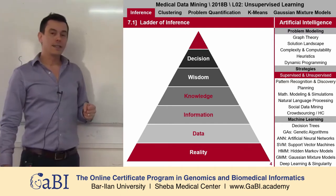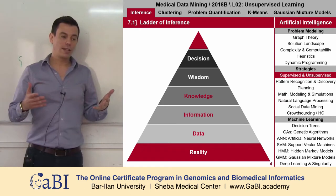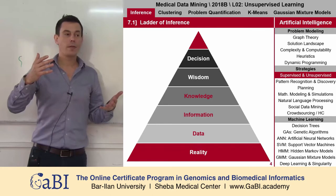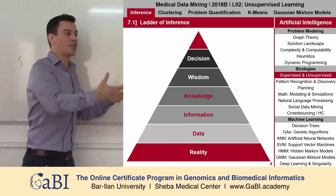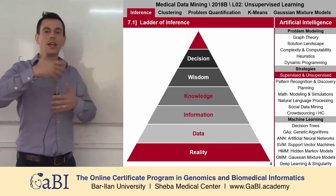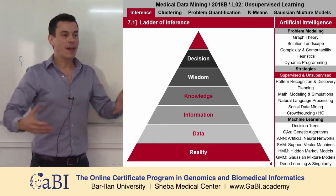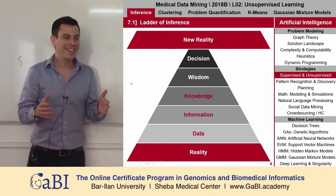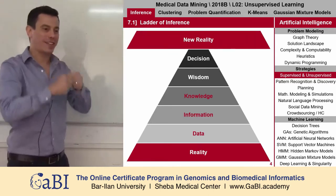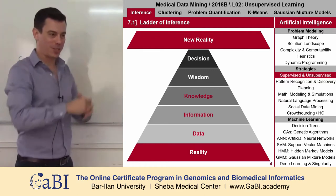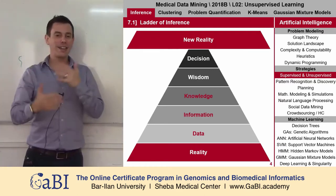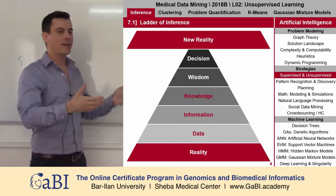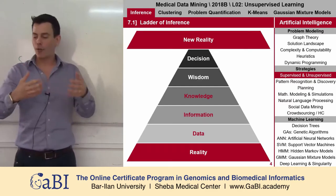After we have some kind of wisdom, we can create a decision. And when we create the decision, what is the next step? We make some kind of an action. That action probably influences reality, and then we have new reality. That new reality we can again measure, create data, from data to information to knowledge and so forth.